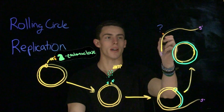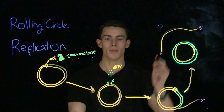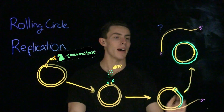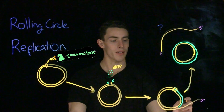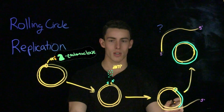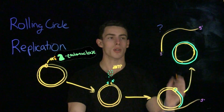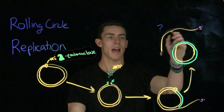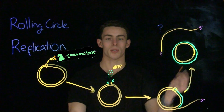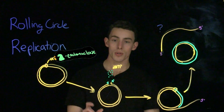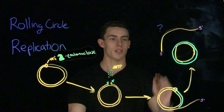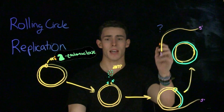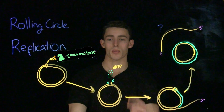There is also the question of what happens to this new strand. It depends, because it can re-cyclize and form another circular molecule of DNA as it's undergoing replication. It could also reform a circle and undergo replication to form another circular molecule, or it could undergo linear replication and form a linear molecule of DNA. So there are a lot of different things that can happen to this extra strand unrolled from the original molecule.